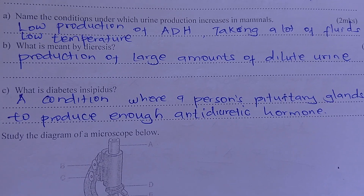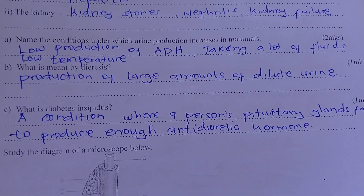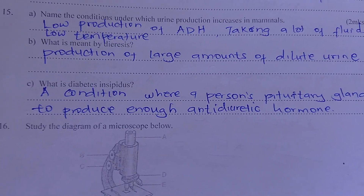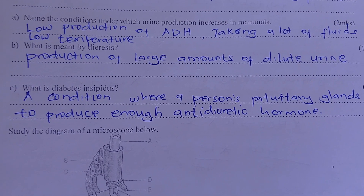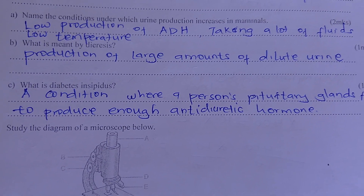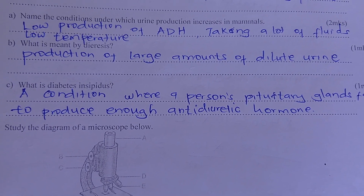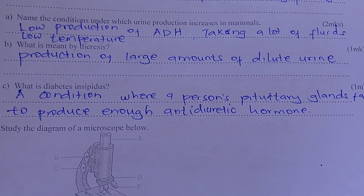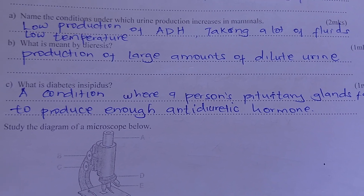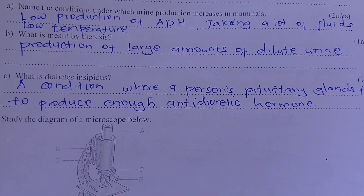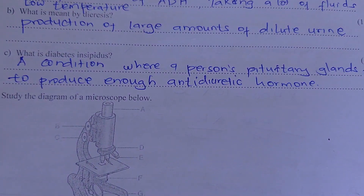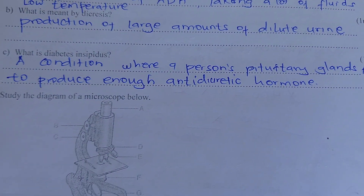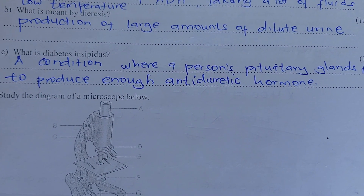Name the conditions under which the production of urine increases in animals: where there is low production of ADH (antidiuretic hormone), taking a lot of fluids, and also low temperatures. What is meant by diuresis? It's the production of large amounts of dilute urine.